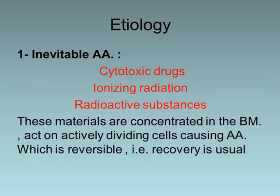The etiology. First, we have the inevitable aplastic anemia. This usually occurs when anyone is exposed to cytotoxic drugs, ionizing radiation, or radioactive substances, because these materials are concentrated in the bone marrow and act on the actively dividing cells causing aplasia, which is usually reversible. Recovery is usual once the exposure is stopped.